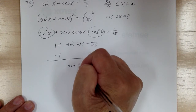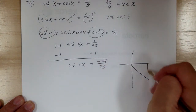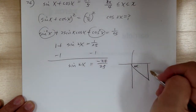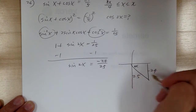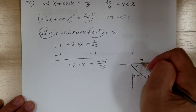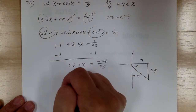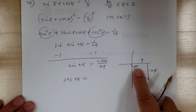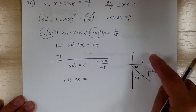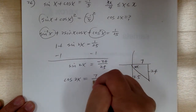Subtracting 1 from both sides, sine of 2x equals negative 24/25. Think of 2x as theta: it's negative 24/25, and using the special triangle, the missing side is 7. Since 2x is in quadrant 4, cosine 2x is positive, so cosine of 2x equals 7/25.